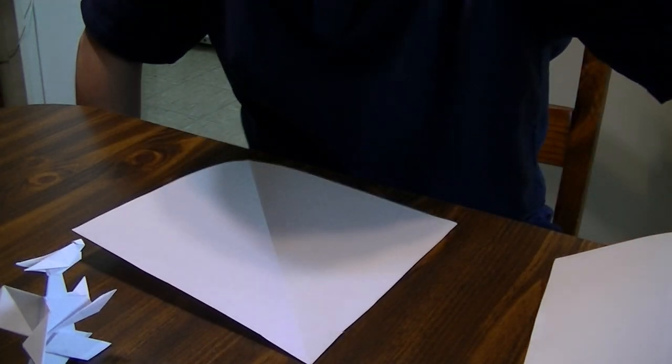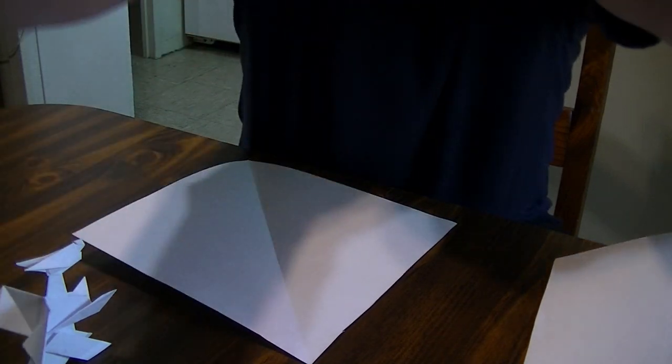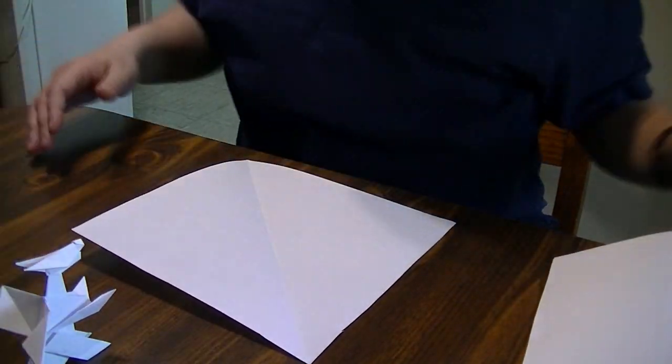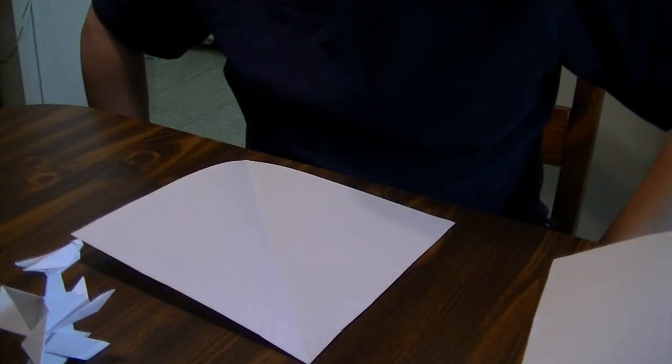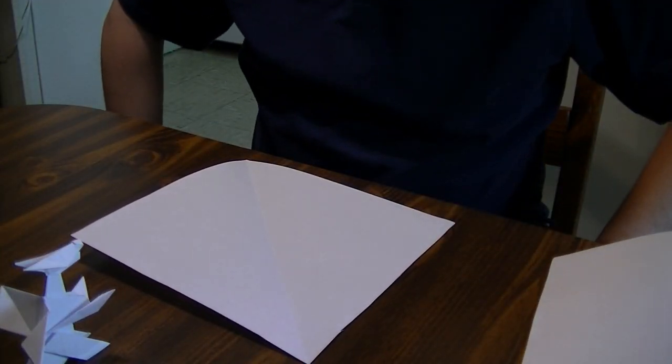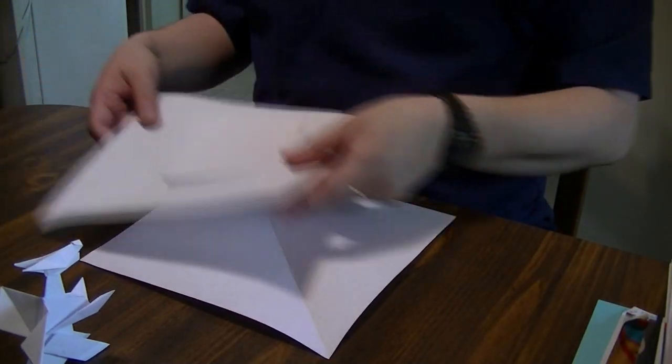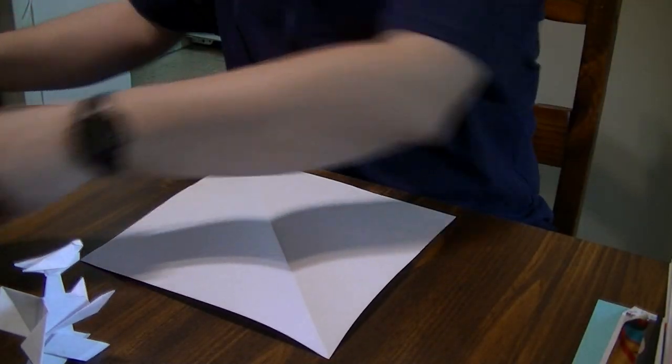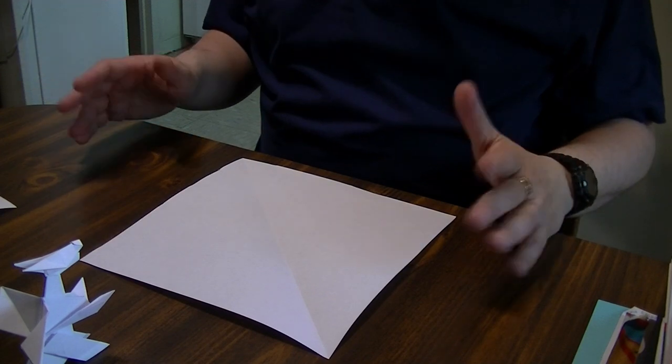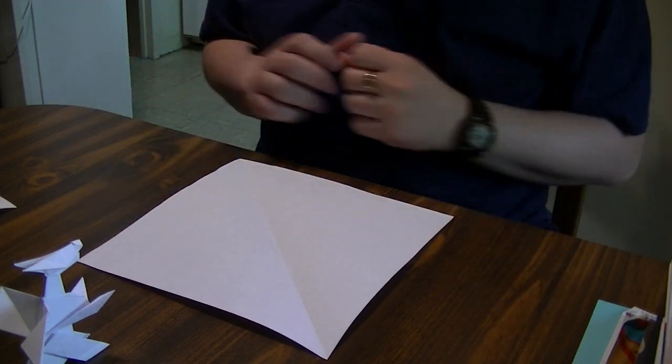For a bit of added flair, see if you can find yourself some orange paper. Because that would probably look better for making a charizard. Okay, so I'm going to prepare the other squares off camera.